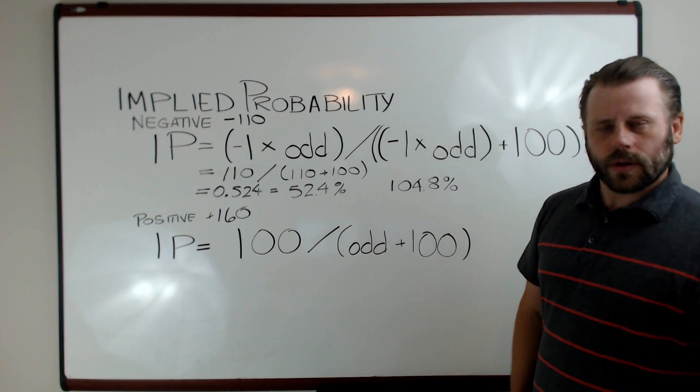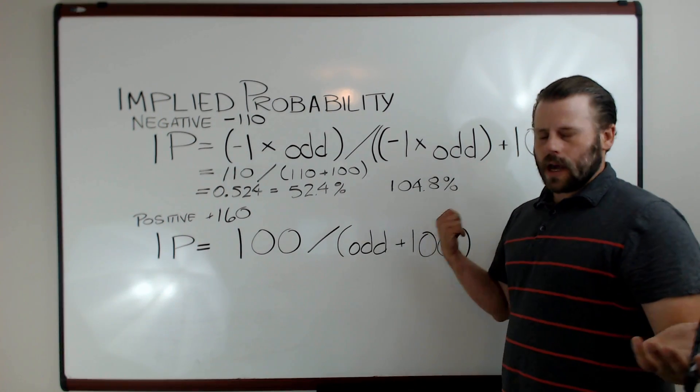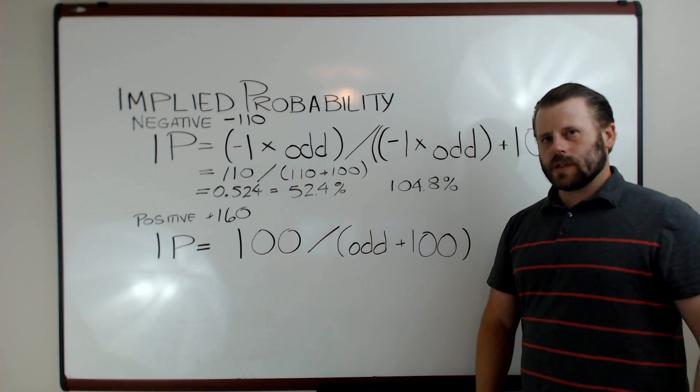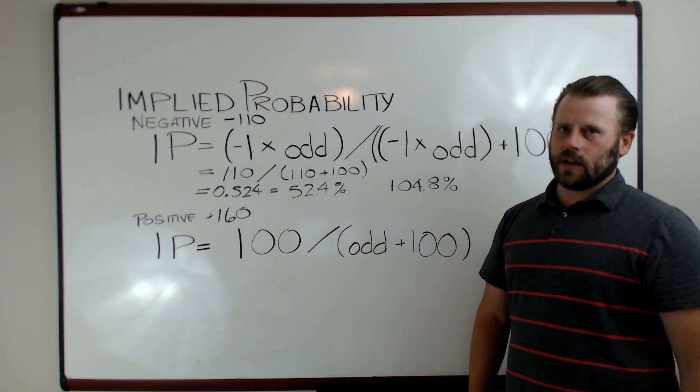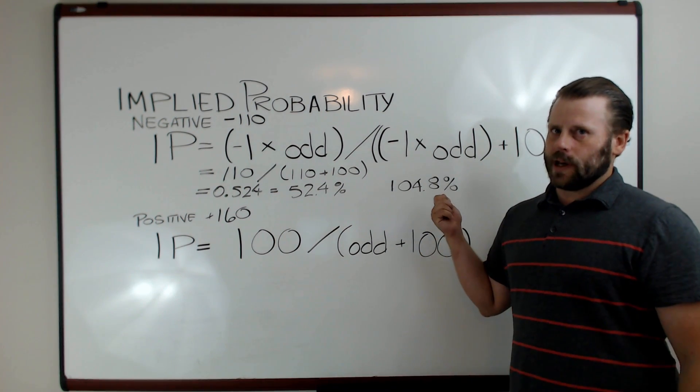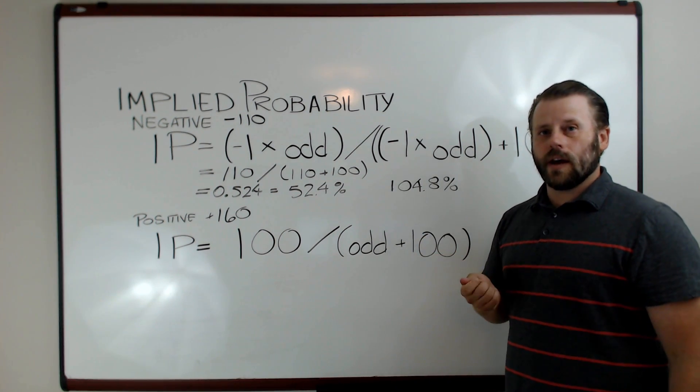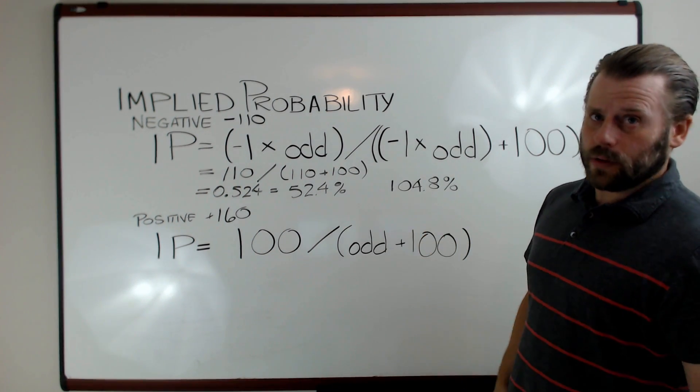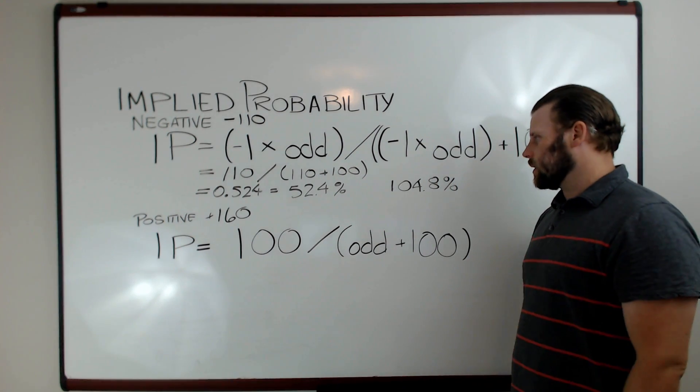Now that number may seem a little weird to you, because how can you have more than 100 percent? Well, that 4.8 percent is the sportsbook's advantage over you. And what you always want to do in every one of your sports bets is get that advantage down as low as you possibly can, or look for bets where that number is as low as possible.